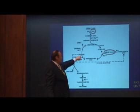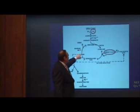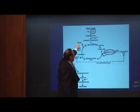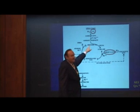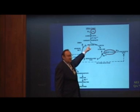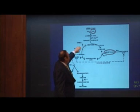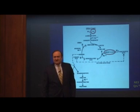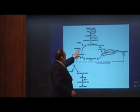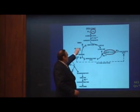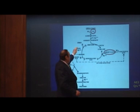Arginine has three ammonia groups on it. Urea has two ammonia groups, and ornithine has one. So when it splits, it gives two of them off into the urine — that's how we get rid of ammonia waste. It's our major pathway, and it requires the arginase enzyme, which we'll address a little bit later.